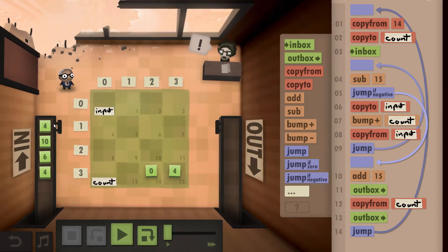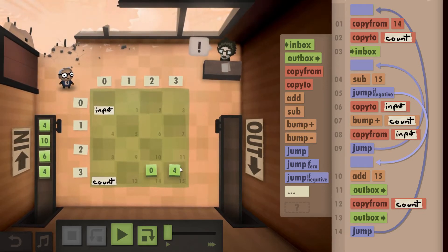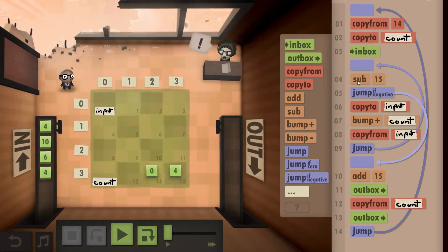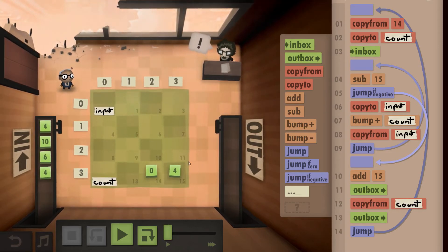First things first, you take this from the inbox, you subtract the 15, which is one of the steps you do for the division. Basically, you subtract as long as you can before you reach negative and count each subtraction.